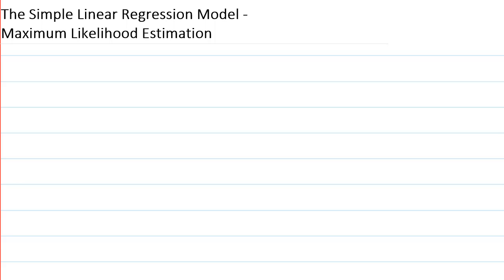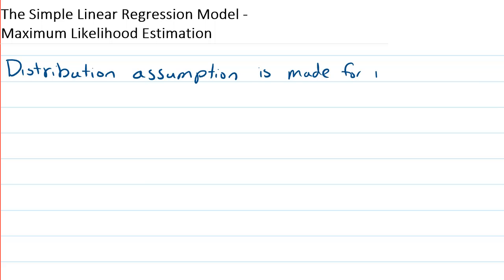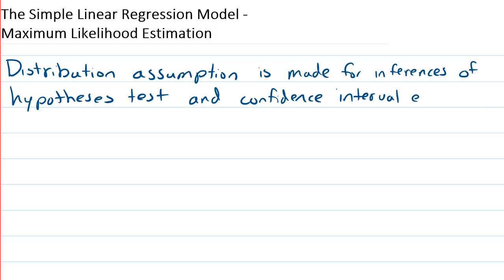Until now, our discussion of the simple linear regression model has not included a distributional assumption. In this video, we're going to talk about maximum likelihood estimation, and therefore we're going to need a distributional assumption. The reason why this distributional assumption becomes important is that later we can make inference, do hypothesis tests, and confidence interval estimation based off of the maximum likelihood estimators. Distribution assumption is made for inferences, hypothesis tests, and confidence interval estimation.